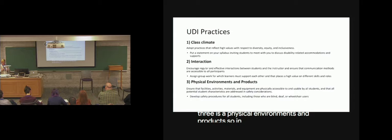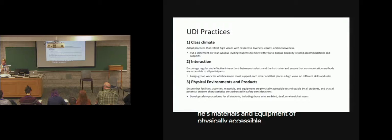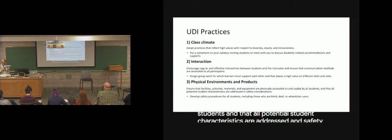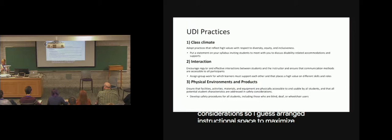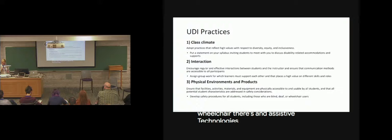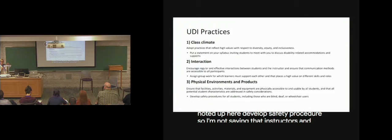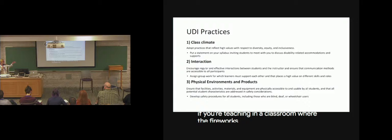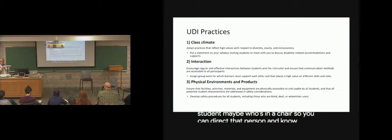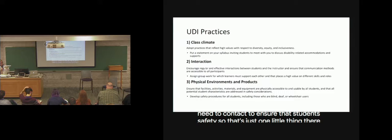Number three is the physical environments and products. So ensure that facilities, activities, materials, and equipment are physically accessible to and usable by all students. And that all potential student characteristics are addressed in safety considerations. Arrange instructional space to maximize comfort and inclusion in a lab room for things like wheelchairs and assistive technologies in classrooms. Develop safety procedures. So you should know if you're teaching in a classroom where the fire exits are. In particular if you have a student maybe who's in a chair. So you can direct that person.